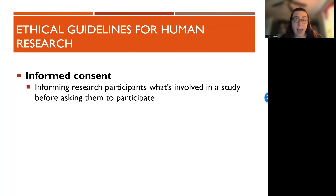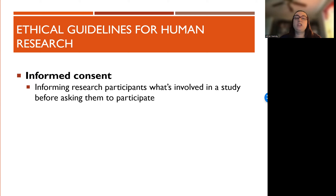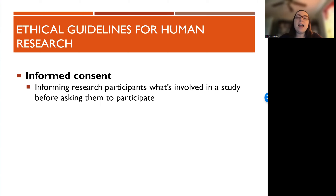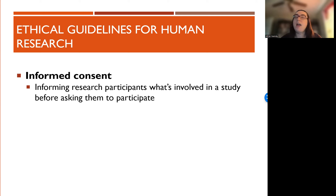You have to tell participants if and how they'll be compensated and how their confidentiality will be protected. You also have to assure them that participation is voluntary and that they can leave at any time without any consequences — this is where Milgram fell short. You have to provide contact information for questions. And it's really important that the statement of informed consent be written in language that is clear to the participant. In academia we tend to be a bit jargony, but that's not going to fly for the informed consent. The rule of thumb is to write it at about an eighth grade level.